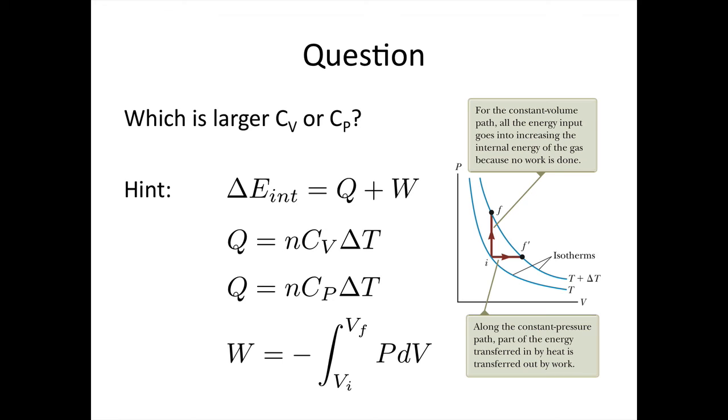Here's a question for you to think about. Which one's going to be larger, the specific heat at constant volume or the specific heat at constant pressure? Here's the hint. The change in internal energy is equal to Q plus W. Q is defined as nCV delta T for the constant volume case and is nCP delta T for the constant pressure case. And the work is equal to minus the integral from VI to VF of P dV.